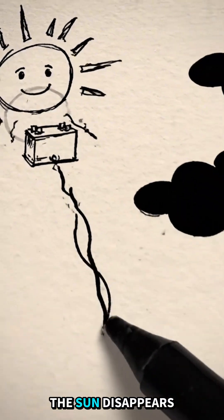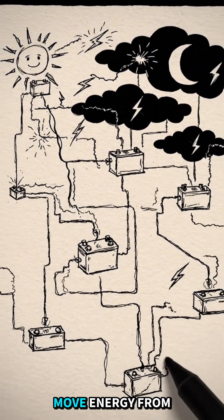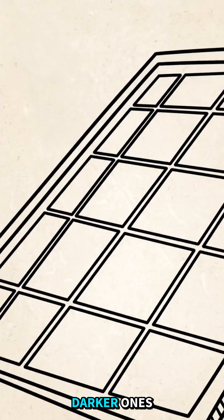At night, of course, the sun disappears entirely. So we'd need huge batteries or systems to move energy from sunny places to darker ones.